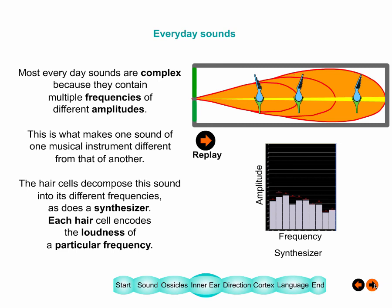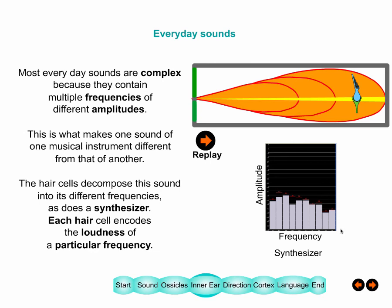For a complex sound there are many frequencies and many different levels for each. All 16,000 hair cells may be firing, each one like a bar on a synthesizer — showing the level of each frequency. The basilar membrane and hair cells act like a synthesizer, breaking the complex sound into its component frequencies and amplitudes.